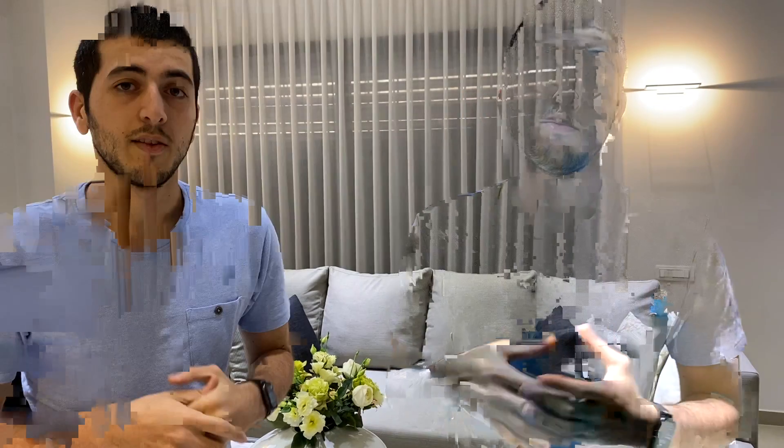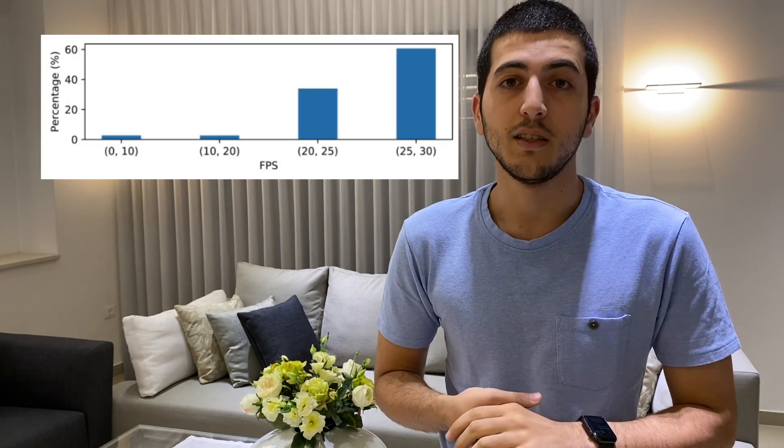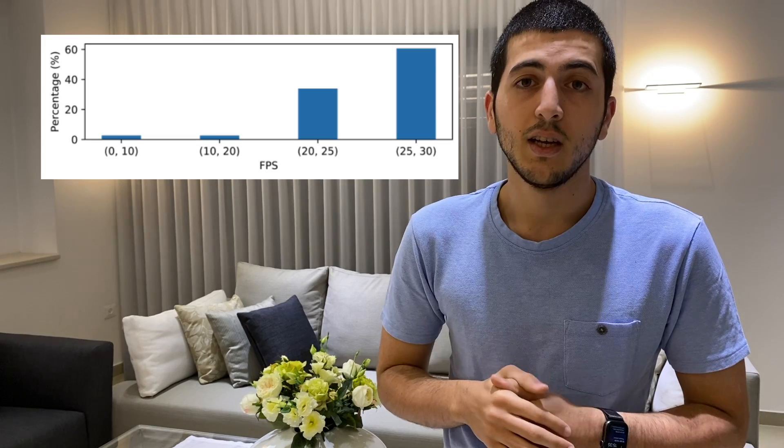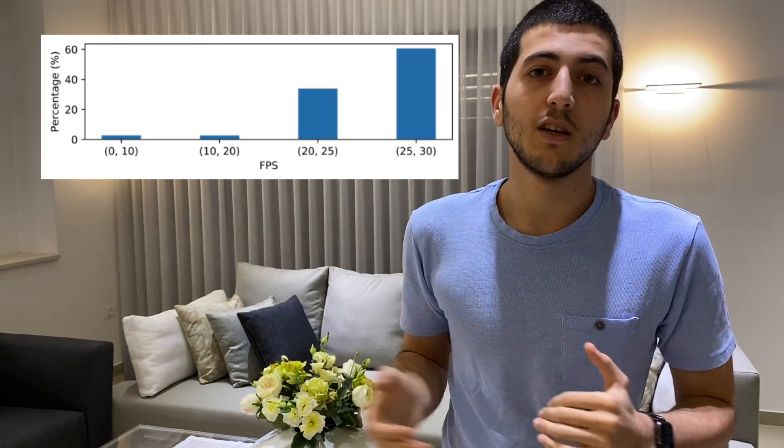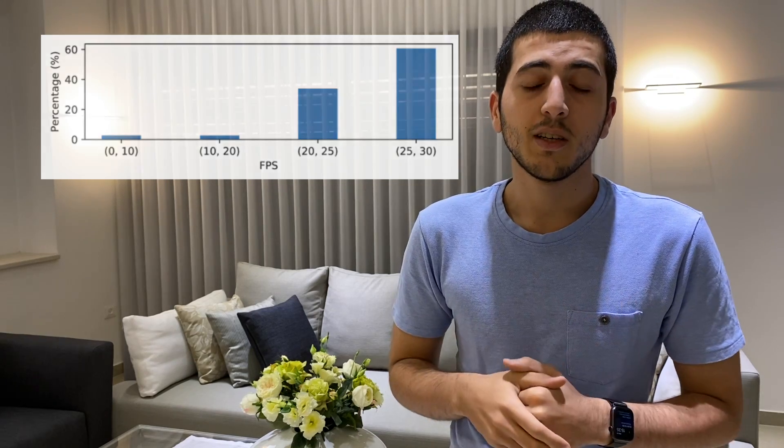Another important thing when dealing with models is to have all the data in the same format. So if we have data at 8 frames per second and other data at 30 frames per second, we could tell the model about the frame rate, but it is much better to just give the model data at a fixed rate like 24 frames per second. As we see from the distribution of frames per second in the ChicagoFSWild dataset, it fluctuates — the entire dataset does not include the same frame rate.